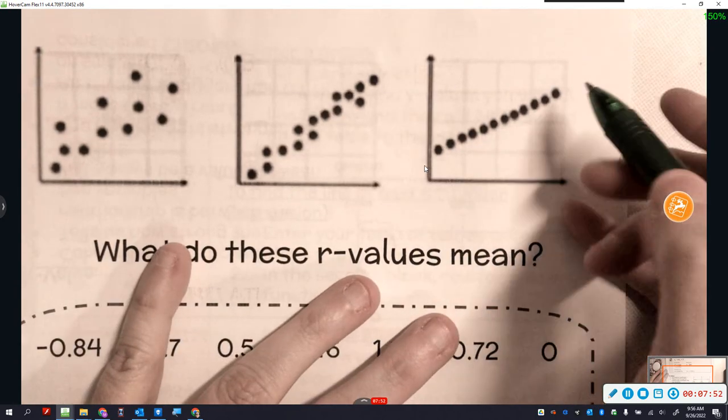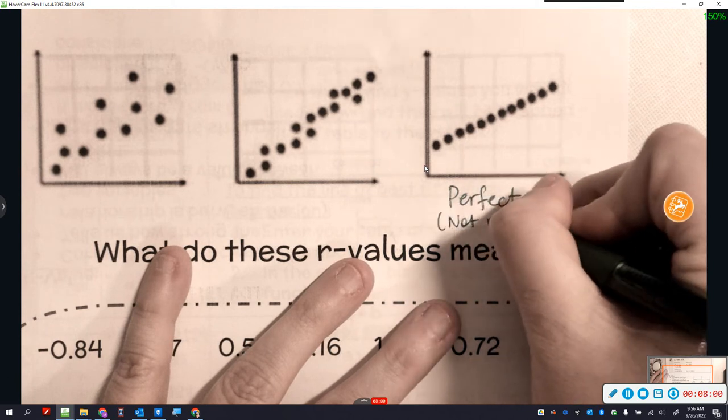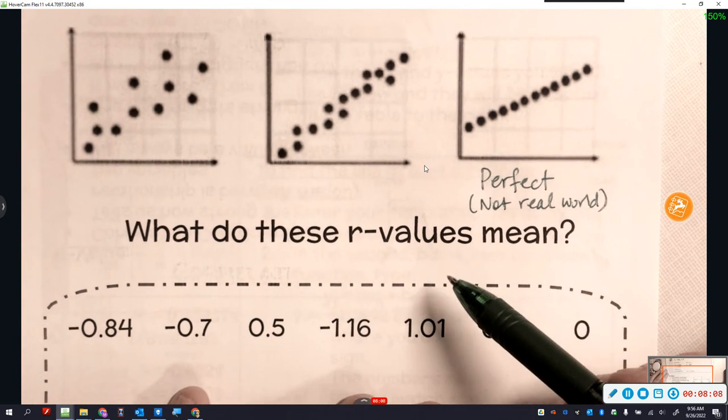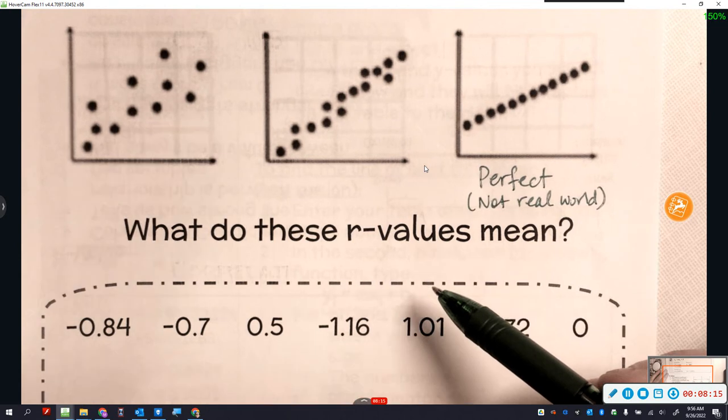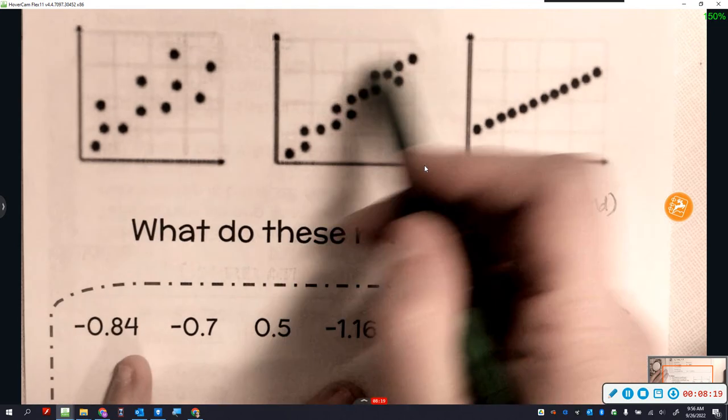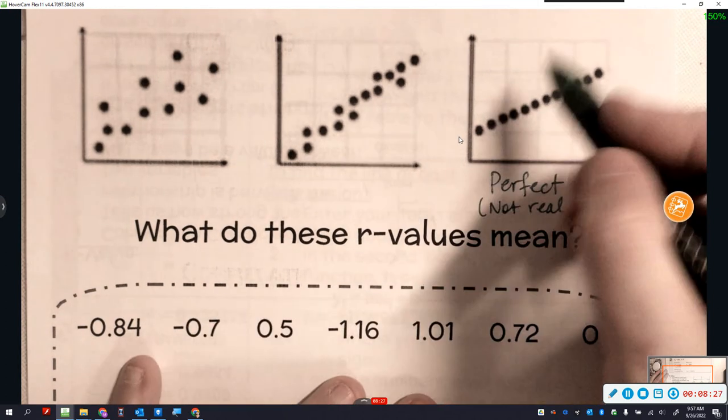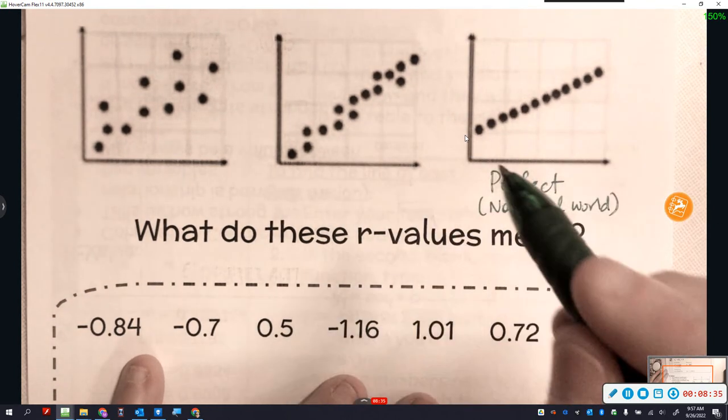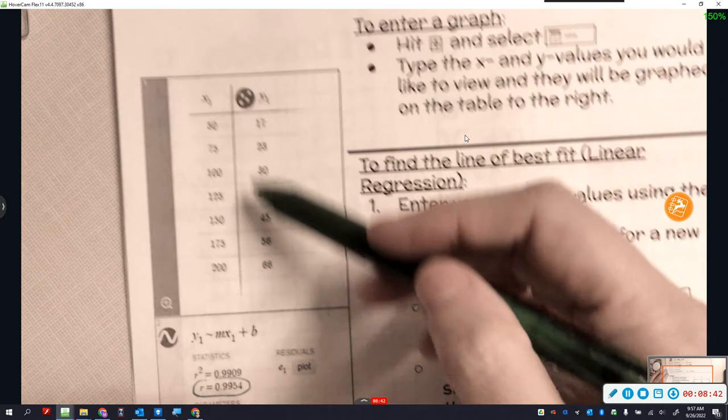The further apart the dots are, the harder it is to figure out what the relationship is. We categorize those as strong, weak, or perfect. This right here would be considered a perfect correlation. Perfect correlations are not real world. The world is not perfect. I'm never going to have every baby that is 21 inches long be 13 pounds. Babies, there's variability in real life. That's why we have scatterplots, because they're based on real world data, and real world data is not perfect.